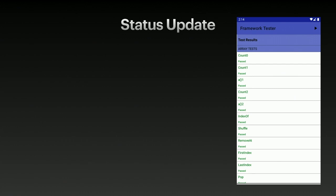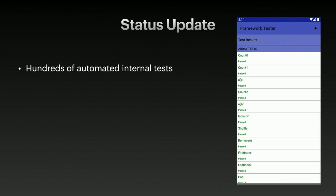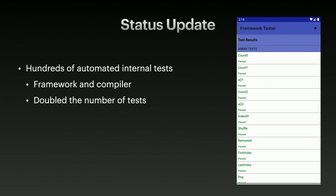Over here on the right is a picture of our little framework tester app. We have hundreds and hundreds of automated tests. Almost all of them pass before a build goes out to you. It tests both the framework and compiler — all kinds of different ways of using and exercising the language, casting, calling the framework, going online, doing things with local databases. Since the last XDC, only seven months ago, we've doubled the number of tests we run daily for Android.